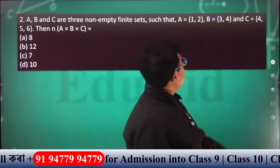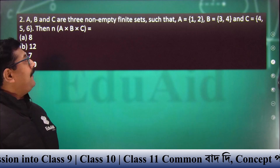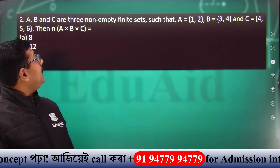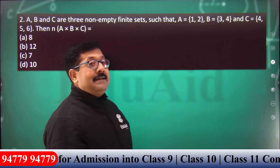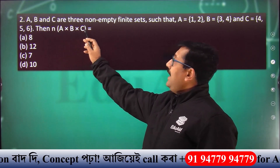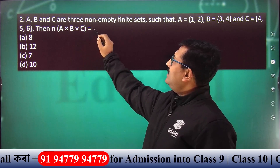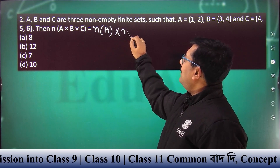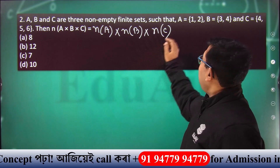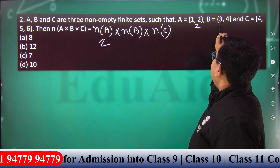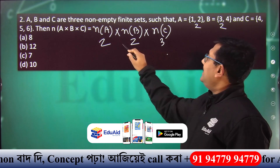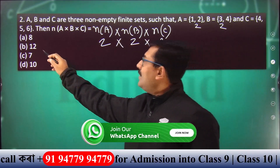Next question: let A, B, C be 3 non-empty finite sets such that A equals {1, 2}, B equals {3, 4} and C equals {4, 5, 6}. A, B, C are non-empty sets. The number of elements in A cross B cross C equals the number of elements in A, multiplied by number of elements in B, multiplied by number of elements in C. Total number of elements is 2 into 2 into 3, that means 12.